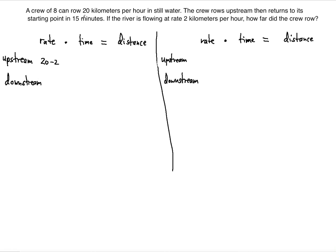The time is 15 minutes, but be careful — 15 minutes is the total round trip time: from point A to B and back from B to A. We label the upstream time as X, but X must be in hours because the rate is given in kilometers per hour. So we convert: 15 minutes multiplied by 1 hour over 60 minutes gives 15/60 hours, which simplifies to 1/4 of an hour.